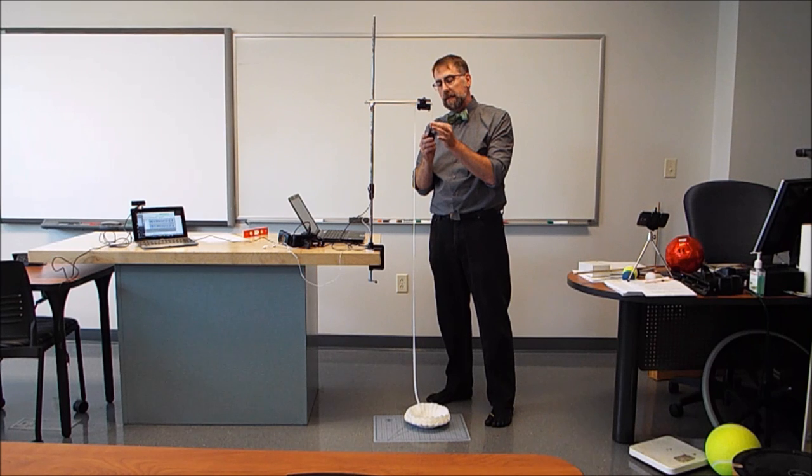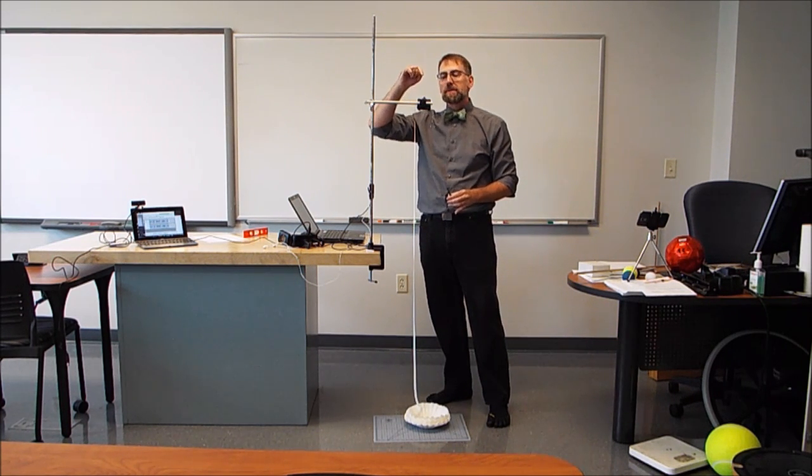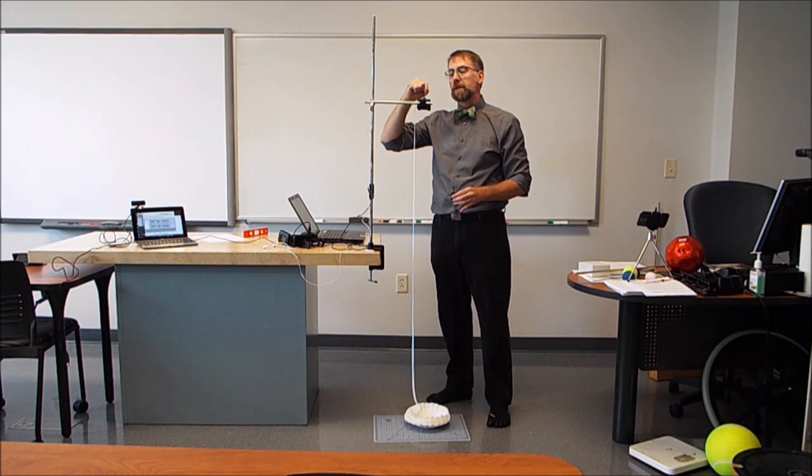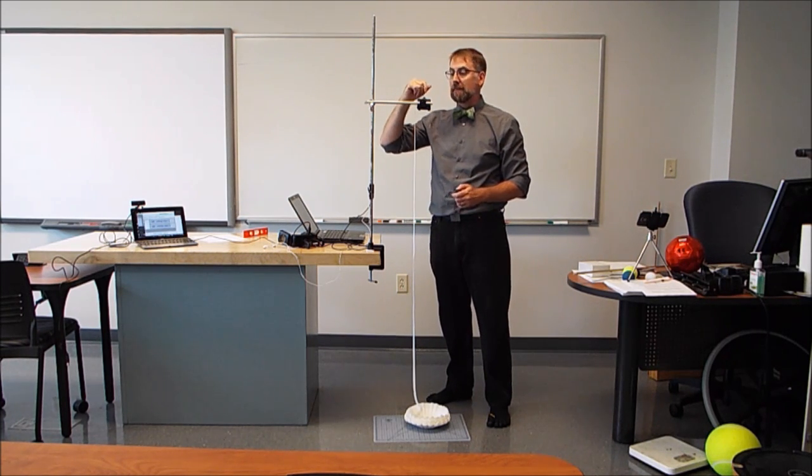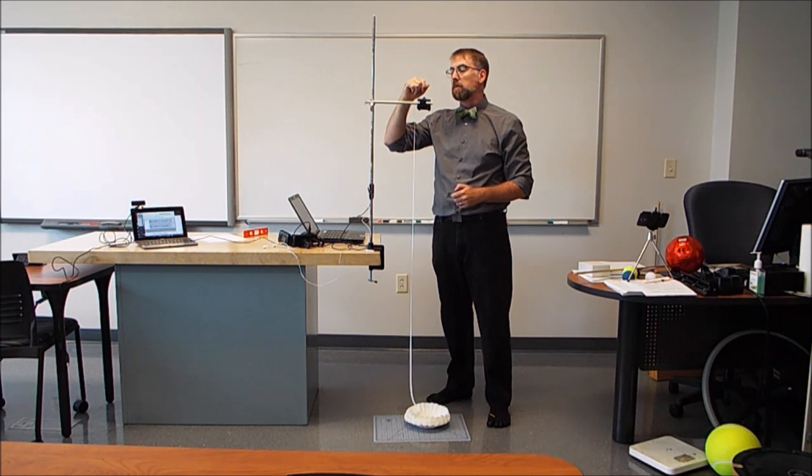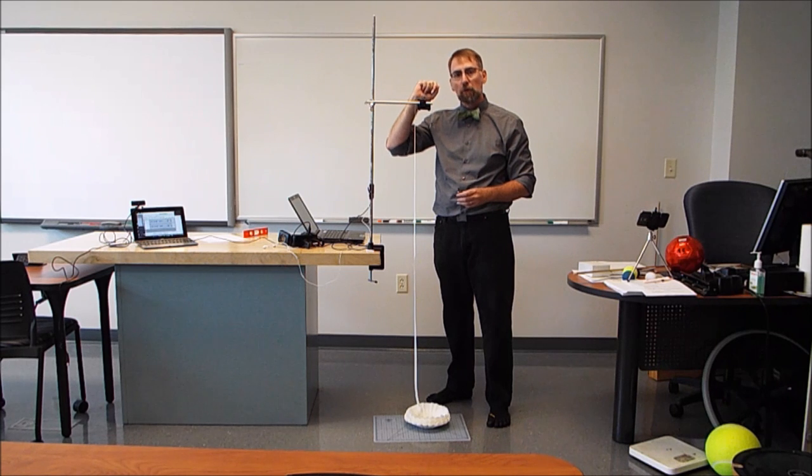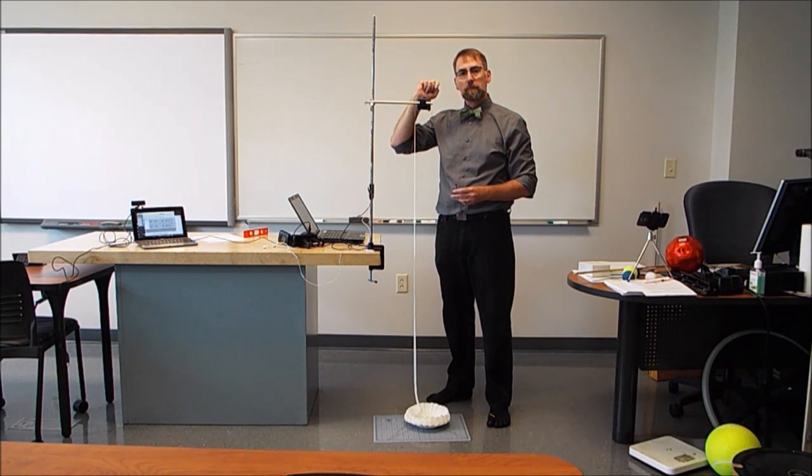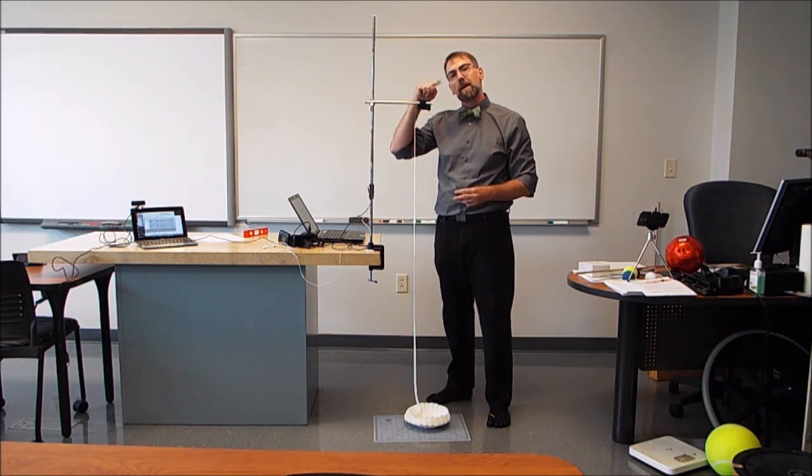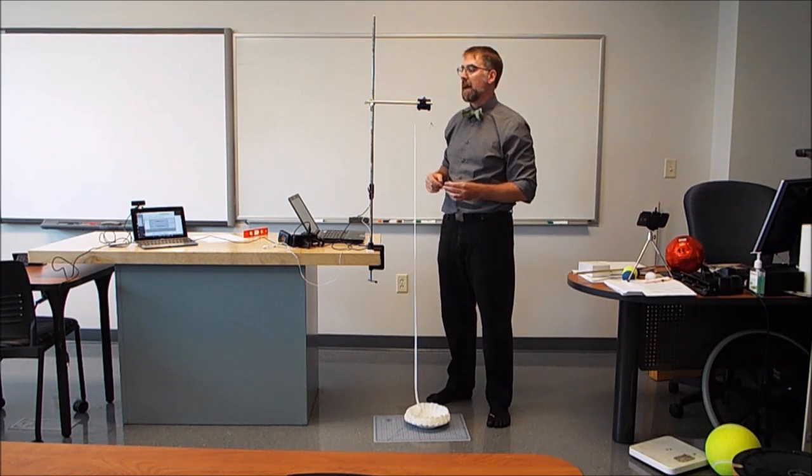So once I hook this in and let it drop, the ticker tape timer makes dots every 1/40th of a second, or it makes 40 dots per second. So it's a rate of 40 Hertz. You'll need to figure out how much time there is between dots for that.